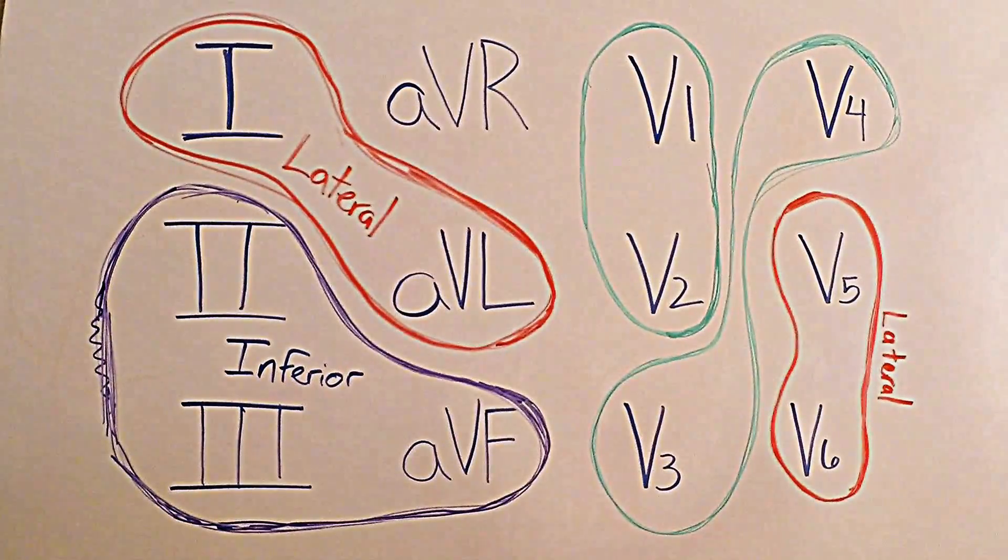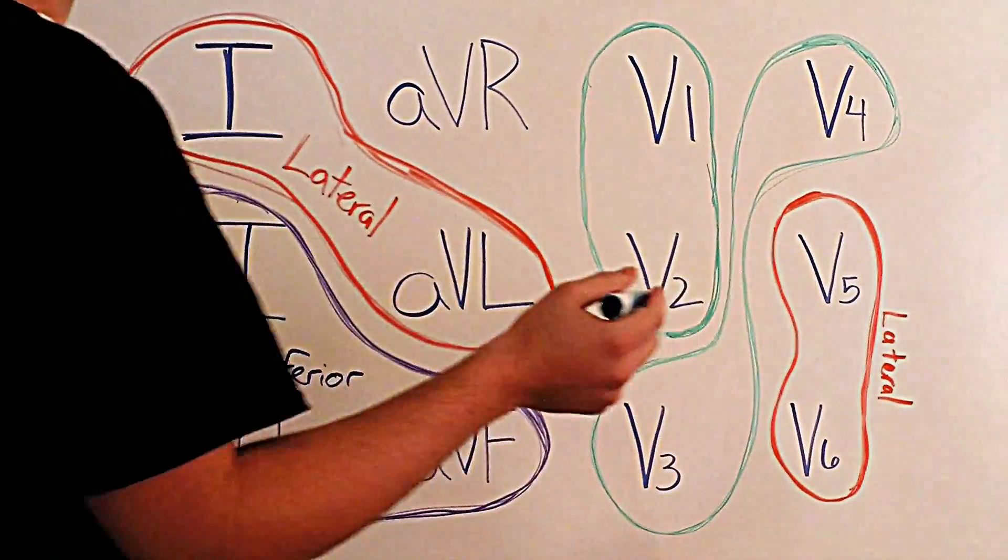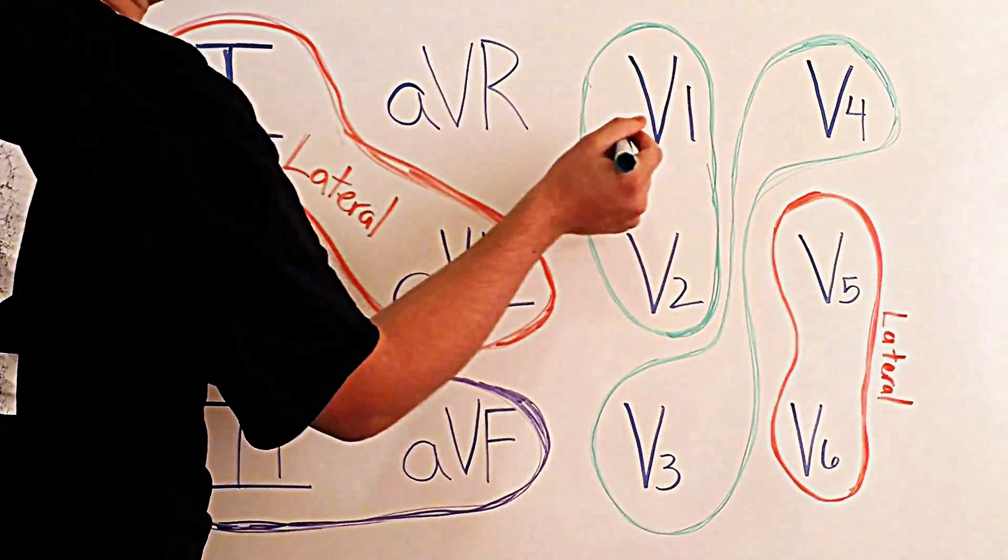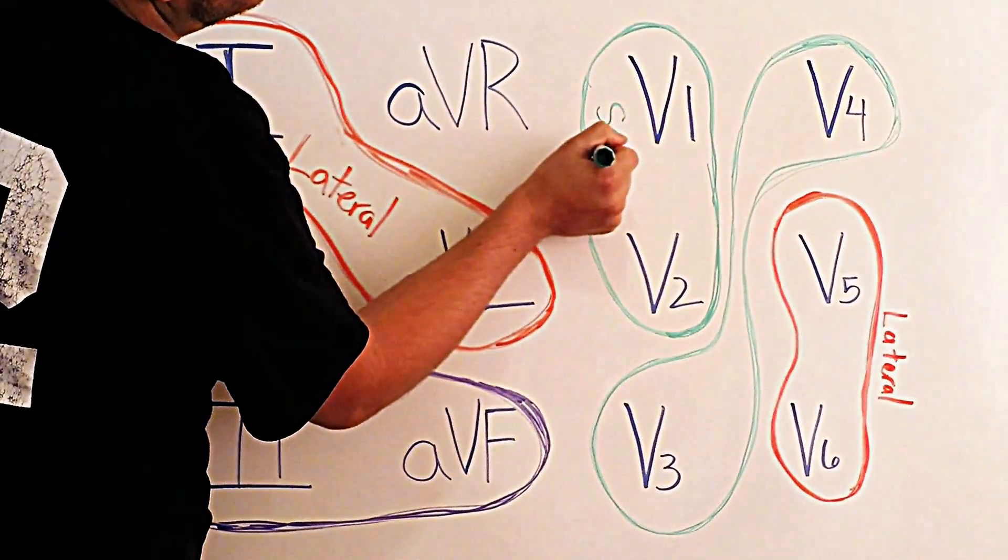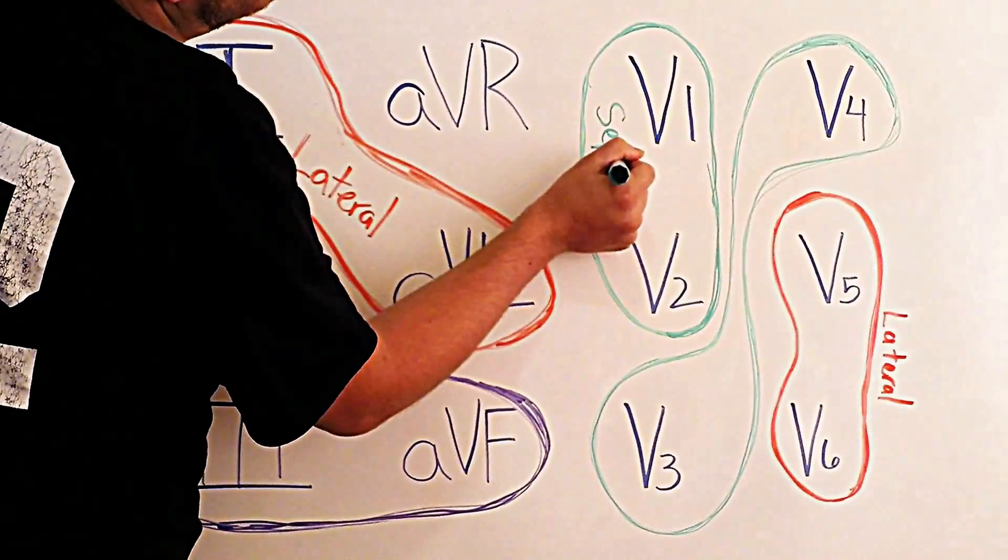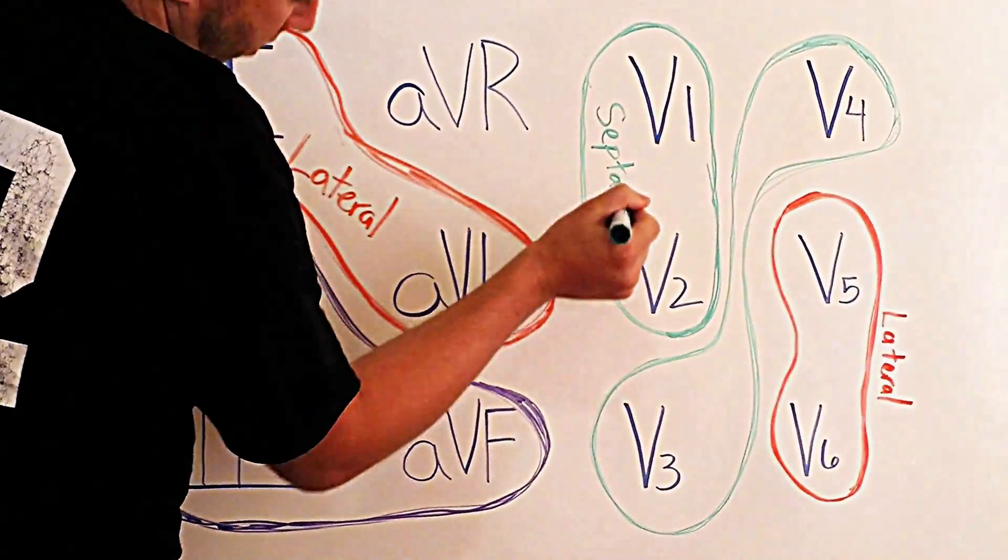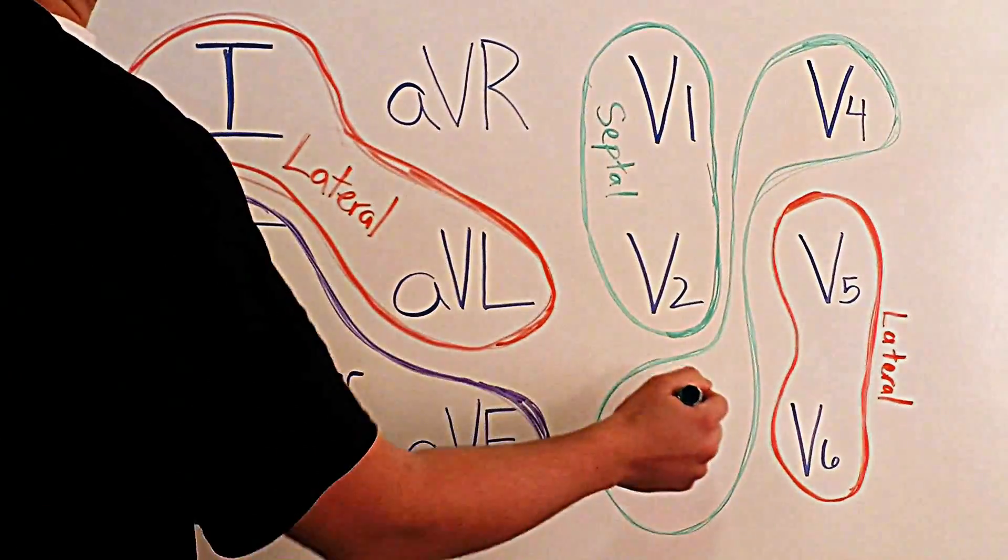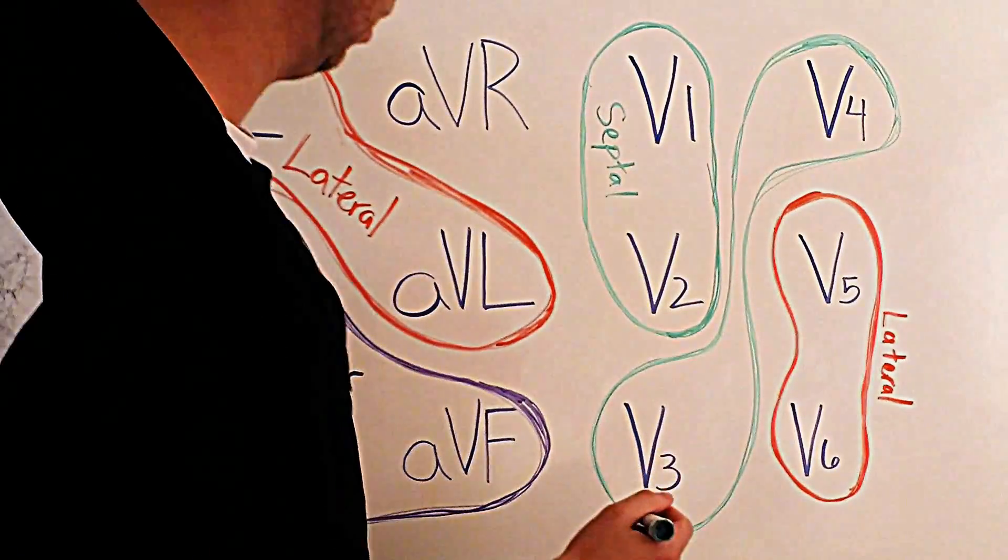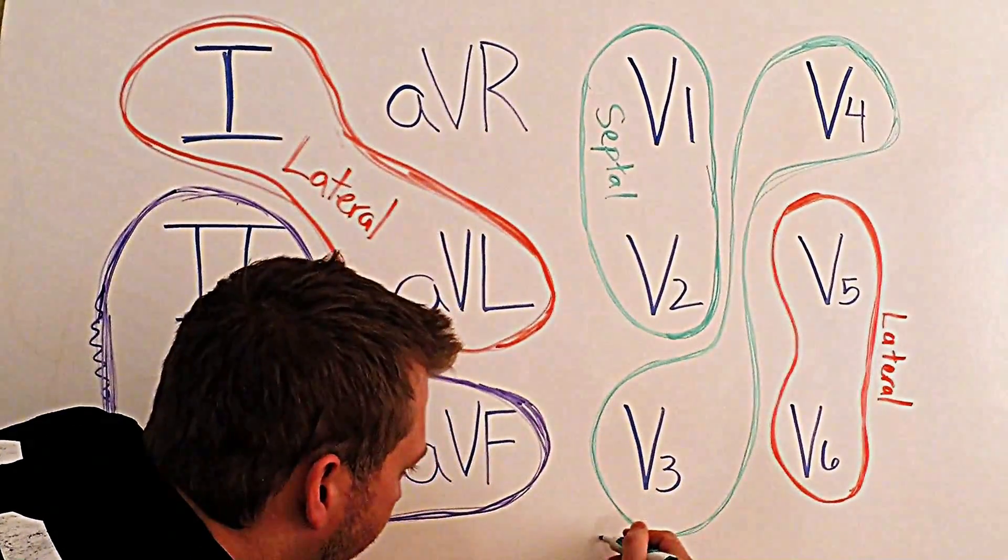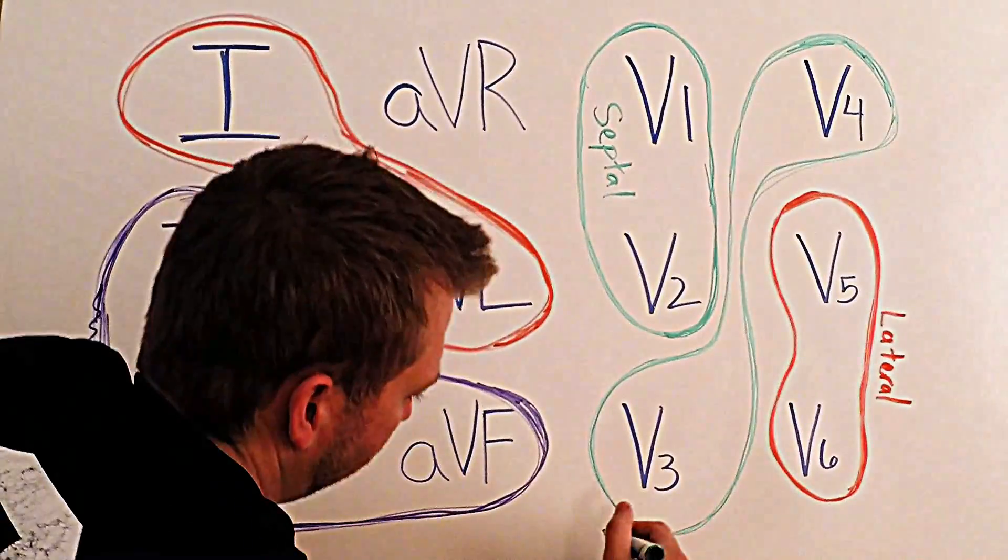Now we are going to label the last two. This is going to be septal, and then this last one is going to be anterior, so I'll put that right here because I can't write sideways.